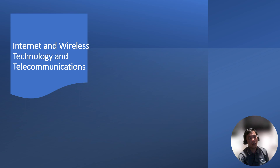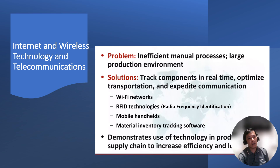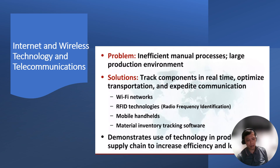Internet and wireless technology and telecommunications. A problem is encountered such as inefficient manual process and large production environment. The solutions proposed are to track components in real-time, optimize transportation, and expedite communication. Using Wi-Fi networks — a Wi-Fi network is simply an internet connection shared with multiple devices in a home or business using a wireless router. RFID technology, radio frequency identification, is composed of two components: the reader and the tag.